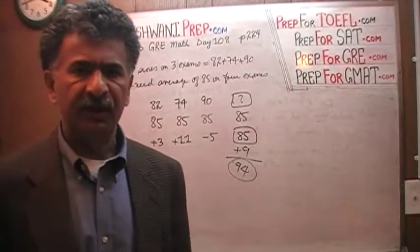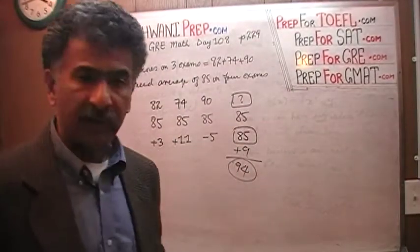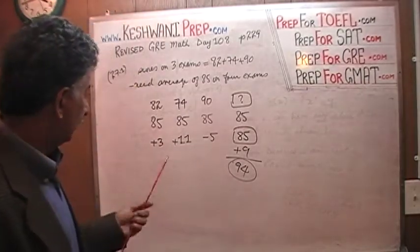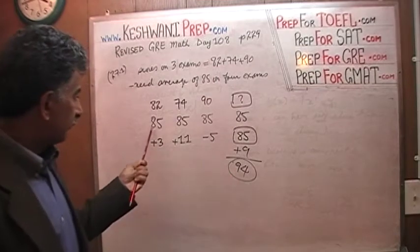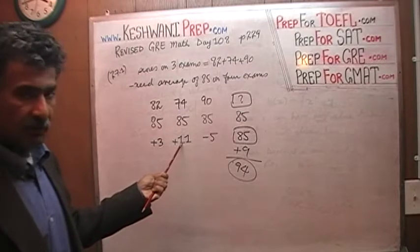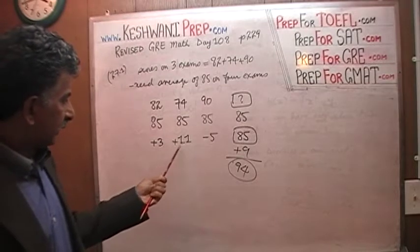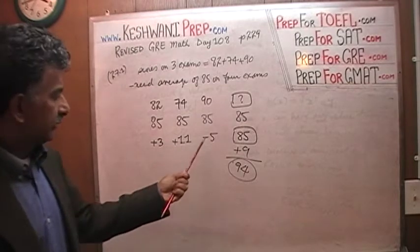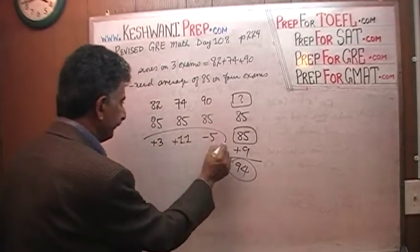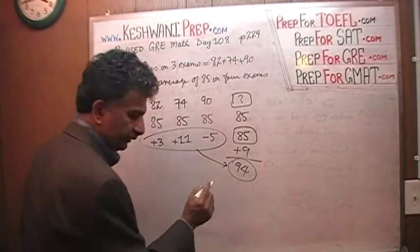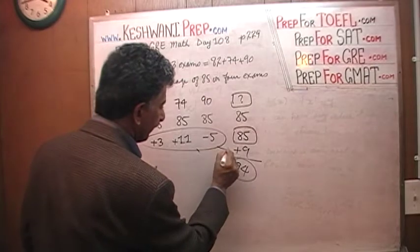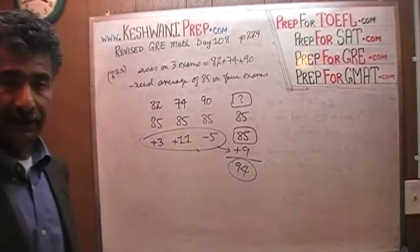And if she gets 94 on the last exam, she would have the average of 85. One more time, it's because the 95 will make up for the fact that she has three short in the first exam. She was 11 short on the second exam. She was 14 points short, but then she got five extra points on the third exam. She scored 90. So overall, she has to make up nine points. She has to make up a difference of nine points right here. That's it. That's one way of doing it.